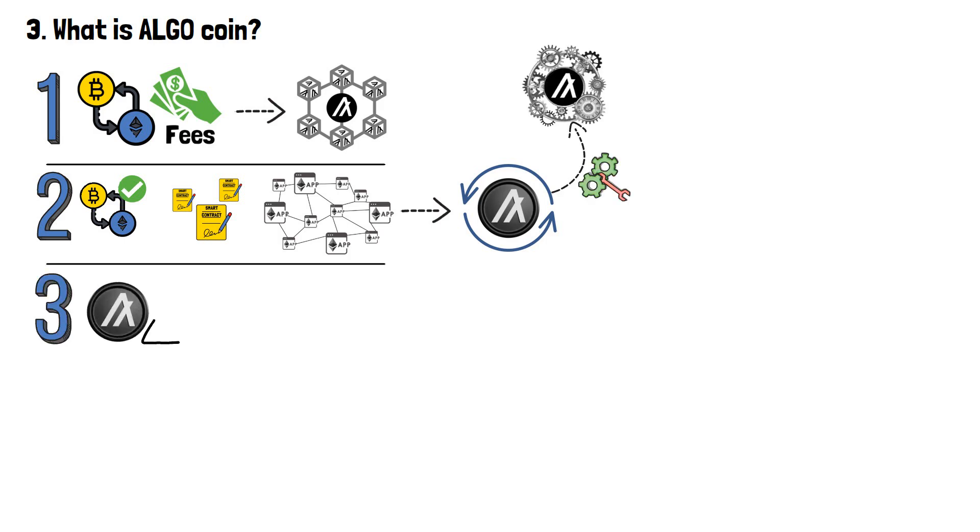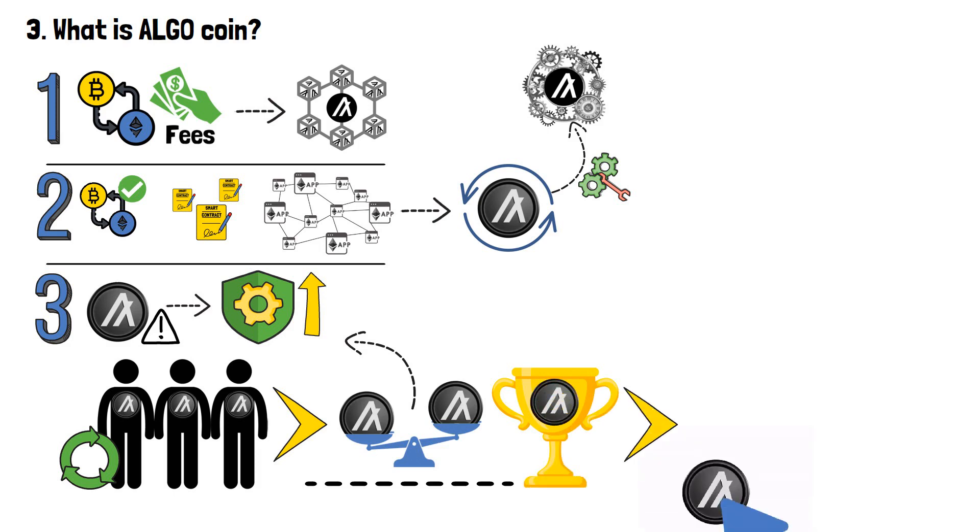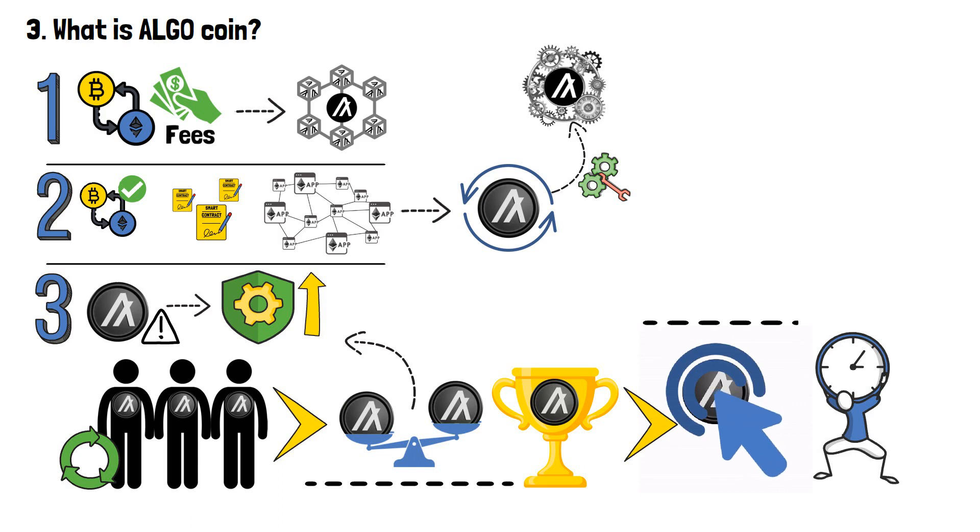Furthermore, Algo plays a crucial role in ensuring the network's security. Token holders can actively contribute to it by staking their Algo, adding to the security and integrity of the blockchain. By staking their tokens, participants have the opportunity to earn rewards in the form of additional Algo, incentivizing active engagement and long-term commitment to the Algorand network.